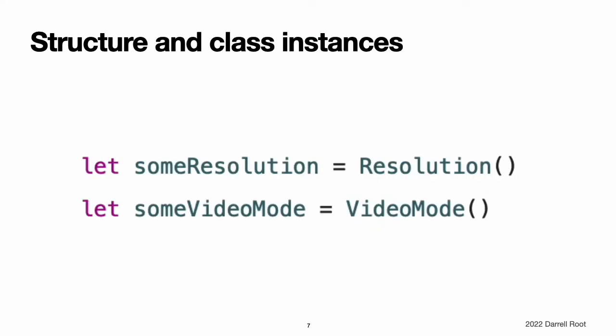Structure and class instances. The Resolution structure definition and the VideoMode class definition only describe what a resolution or video mode will look like; they themselves do not describe a specific resolution or video mode. To do that, you need to create an instance of the structure or class. Structures and classes both use initializer syntax for new instances. The simplest form uses the type name followed by empty parentheses, such as Resolution() or VideoMode(). This creates a new instance with any properties initialized to their default values.